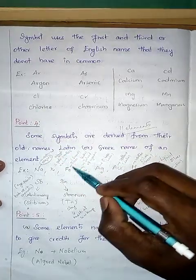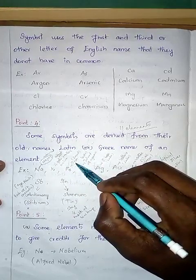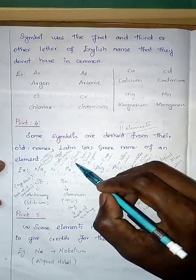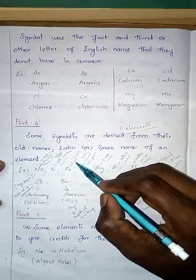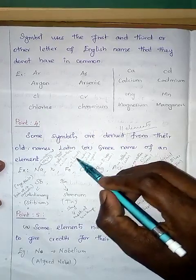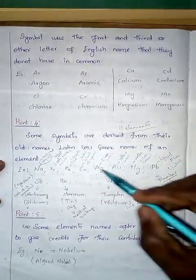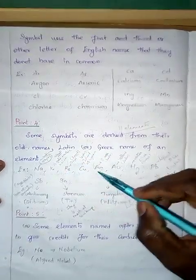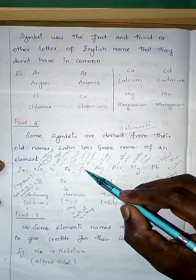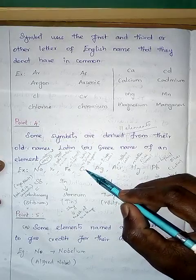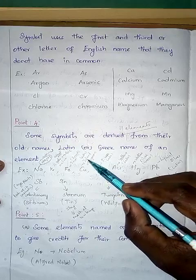Next, Fe is the symbol for iron. In Latin iron is called ferrum. The real meaning is iron or sword, as it was used in sword-making — that is the reason it is called ferrum. Next, copper has the symbol Cu. The Latin name is cuprum, because copper is found on the island of Cyprus.